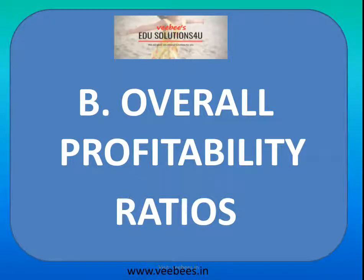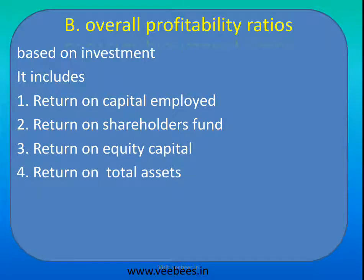Dear students, today we are discussing the second part of our profitability ratio, that is overall profitability ratio. Overall profitability ratios evaluate the financial position based on investment. In general profitability ratios, we calculated all the ratios based on sales — gross profit divided by sales, net profit divided by sales, operating profit divided by sales. But in overall profitability ratios, we consider different types of investments, so it is calculated based on investments.